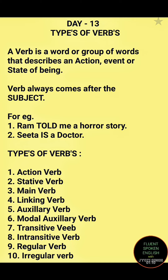Let's understand the types of verbs in detail. We have identified 10 verbs, namely: action verb, stative verb, main verb, linking verb, auxiliary verb, modal auxiliary verb, transitive verb, intransitive verb, regular verb, and irregular verb.